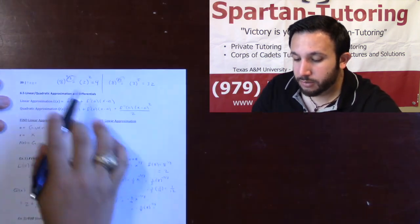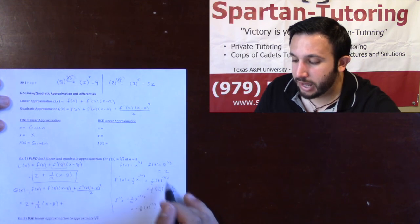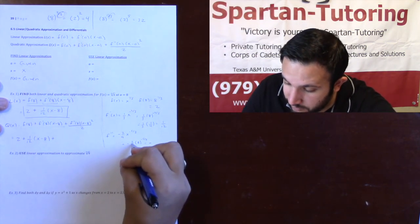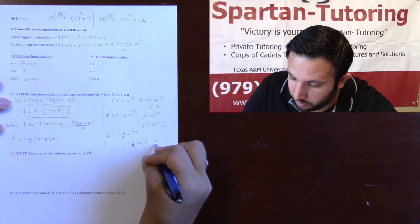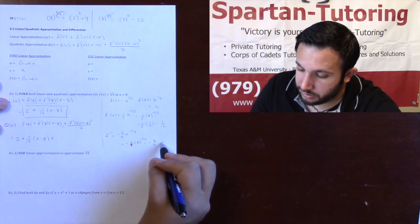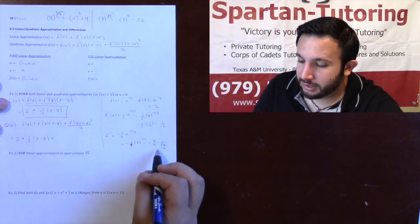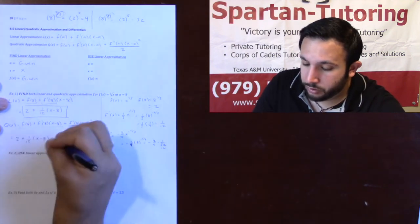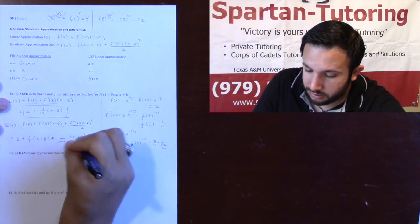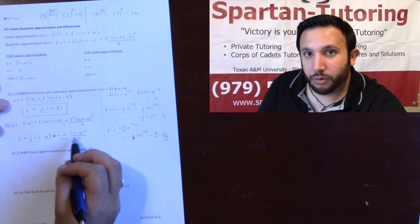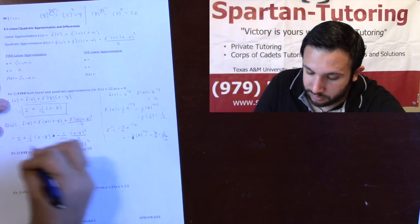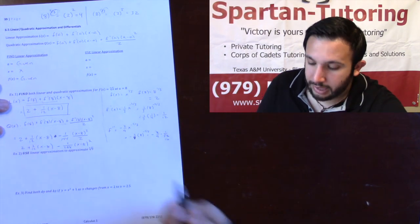Because 8 to the negative five-thirds is 1 over 32, we get negative two-ninths times one over 32, which simplifies to negative 1 over 144. So the quadratic approximation is: 2 plus one-twelfth times (x minus 8) minus one-hundred-forty-fourth times (x minus 8) squared over 2, which you can also write as minus 1 over 288 times (x minus 8) squared. That's your quadratic approximation.